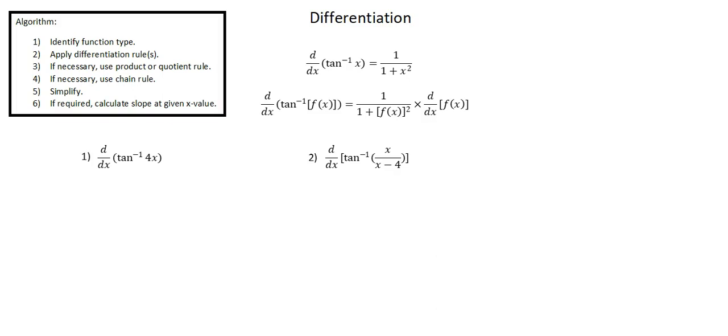The derivative of the inverse tangent of a particular function is 1 over 1 plus the square of that function times the derivative of that function. That times derivative is an application of the chain rule.